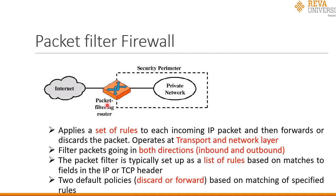Looking at the diagram, the outside world is connected to the internet, and the private network is also connected to the internet. Any traffic coming from the internet to this private network must pass through the packet filtering router. This entire private network is called the security perimeter, secured through this packet filtering router, which applies a set of rules to each incoming packet and then forwards or discards it. It normally operates at the transport layer and network layer.